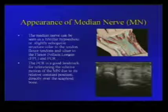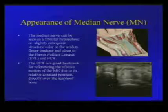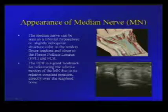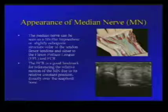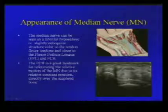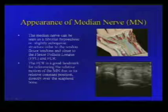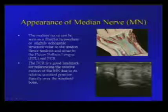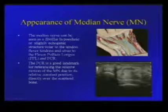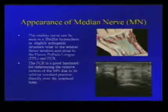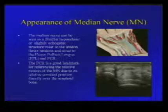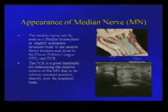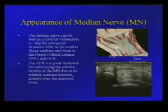Looking at the ultrasound cross-section through the carpal tunnel: on the radial side is the scaphoid bone, then the capitate bone. Over the capitate in the volar soft tissues is the flat structure of the median nerve. The flexor carpi radialis sits outside the carpal tunnel and serves as a good constant reference point for the location of the median nerve. The flexor digitorum is also shown relative to the median nerve and flexor carpi radialis.